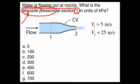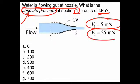There's our units, and the velocity at 1 is specified as 5 meters per second. The velocity at 2 is 5 times faster, 25 meters per second.